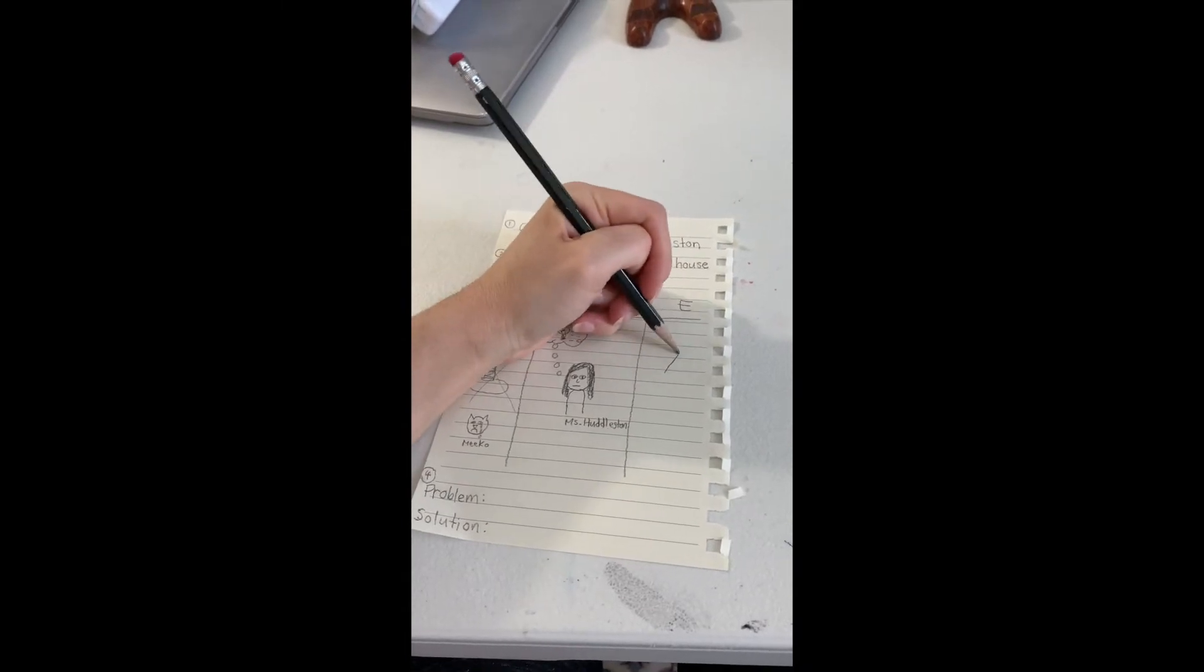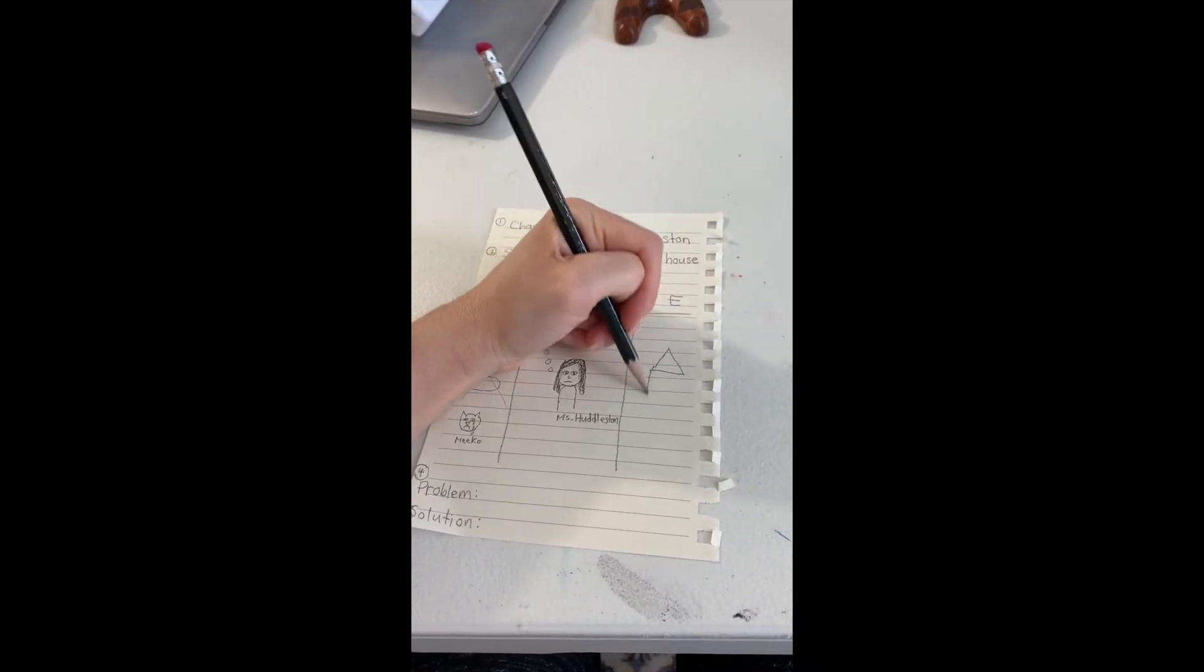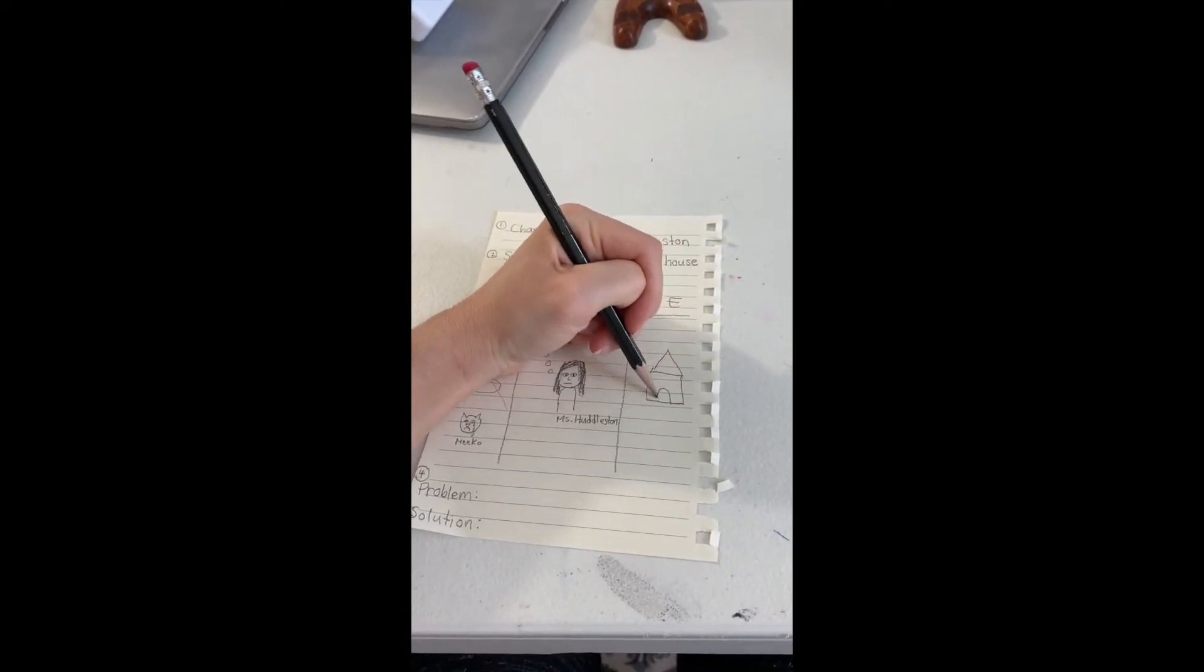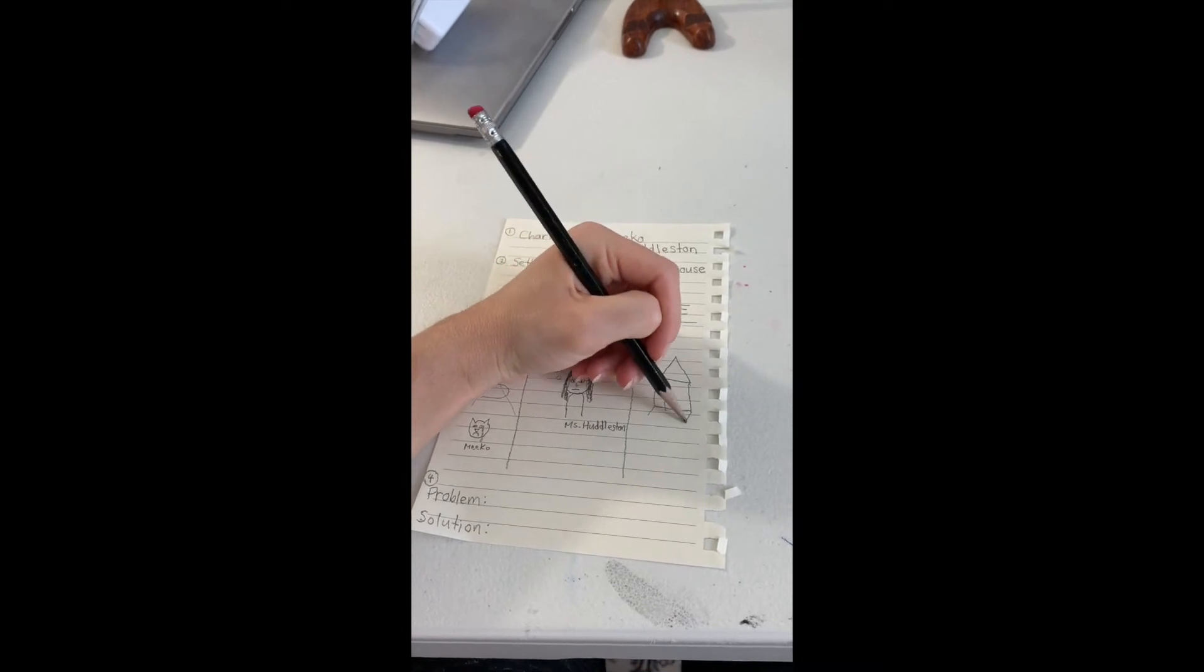And at the end, I'm going to draw the new scratching post that Miko gets that has a little house to go with it.